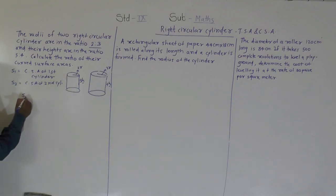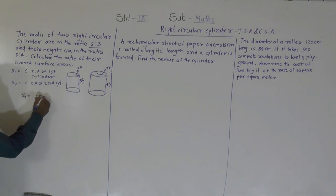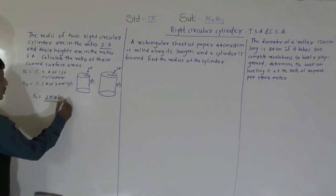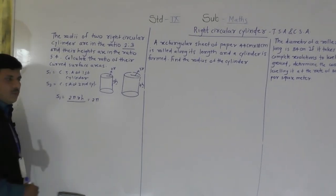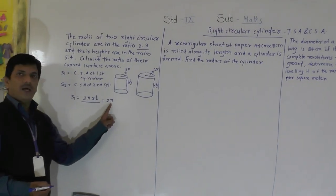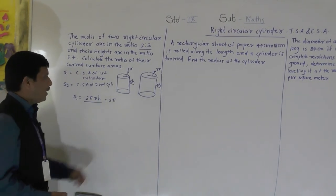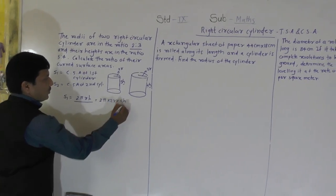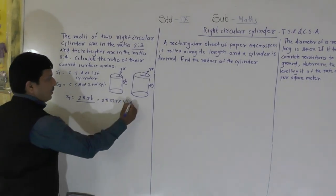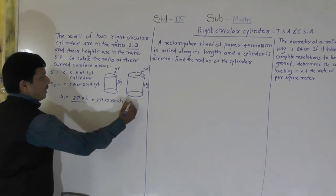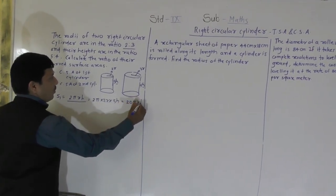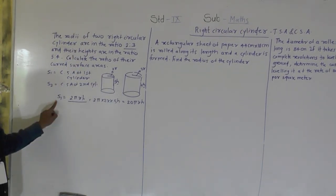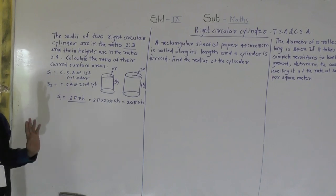S1 equals 2πrh. We substitute: 2π into radius 2r and height 5h. So S1 = 2π × 2r × 5h = 20πrh square units.